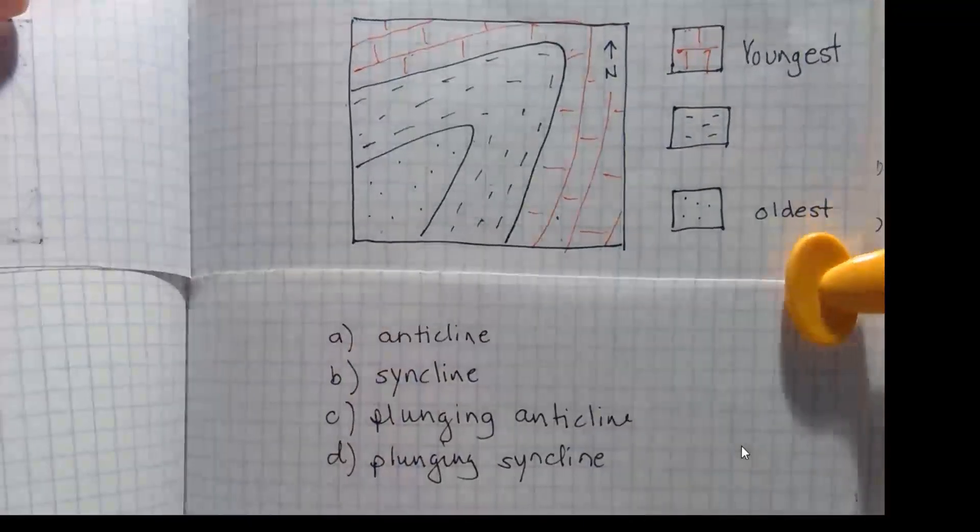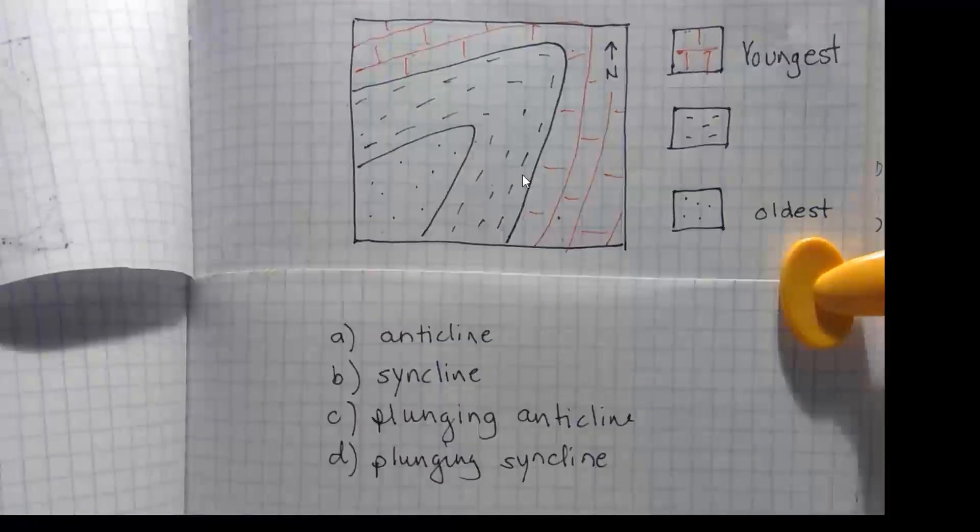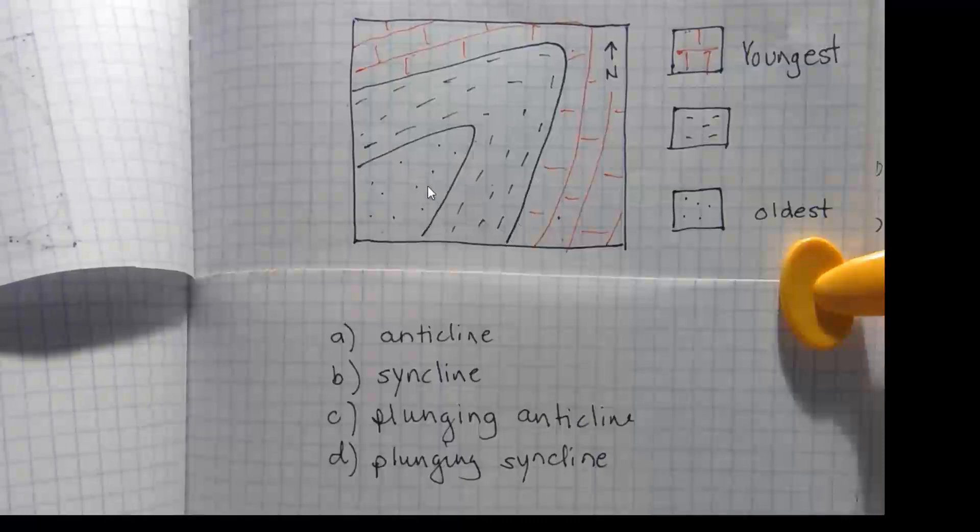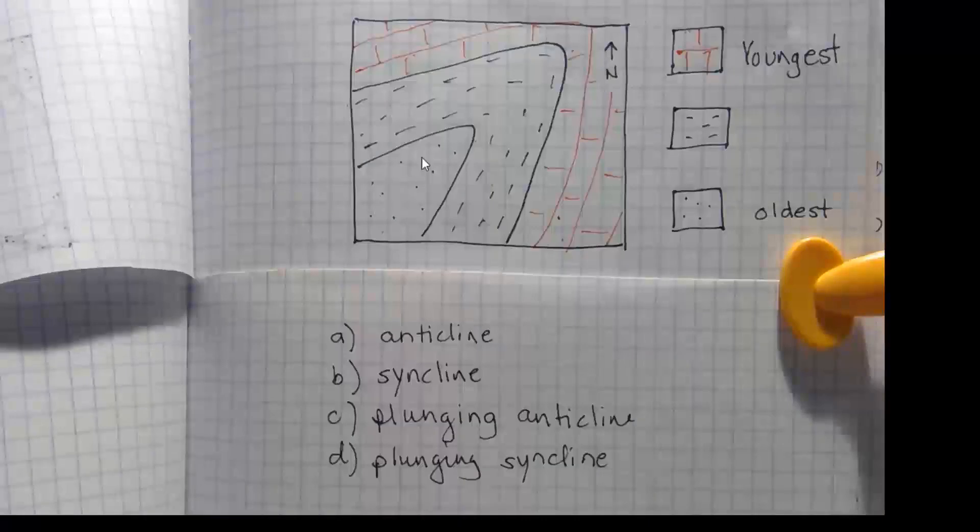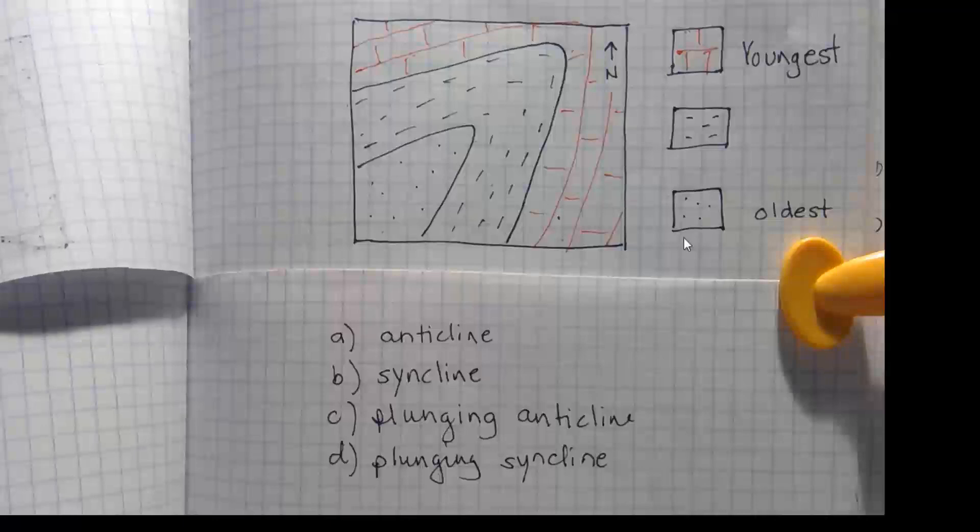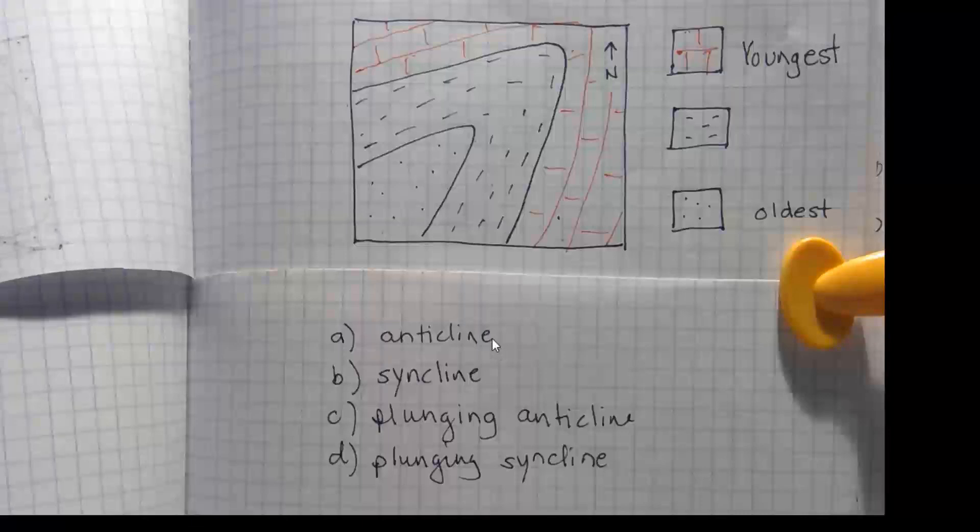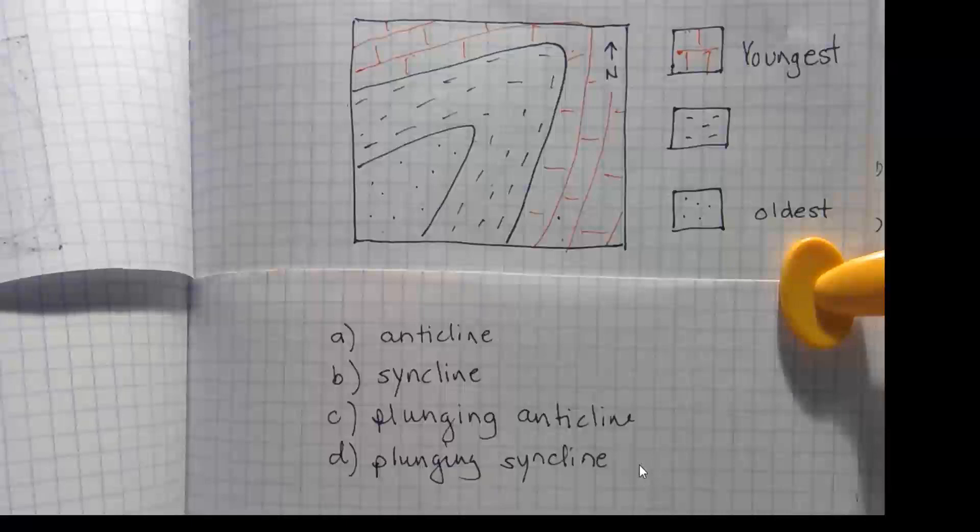One more fold question over here. This time we have no strike and dip symbols. We have this sandstone rock formation, a shale rock formation, and limestone out here on our geologic map. And we are given the relative ages of those three rock units. The sandstone's the oldest. So is the map indicating that there's an anticline, syncline, plunging anticline, or plunging syncline in the subsurface?